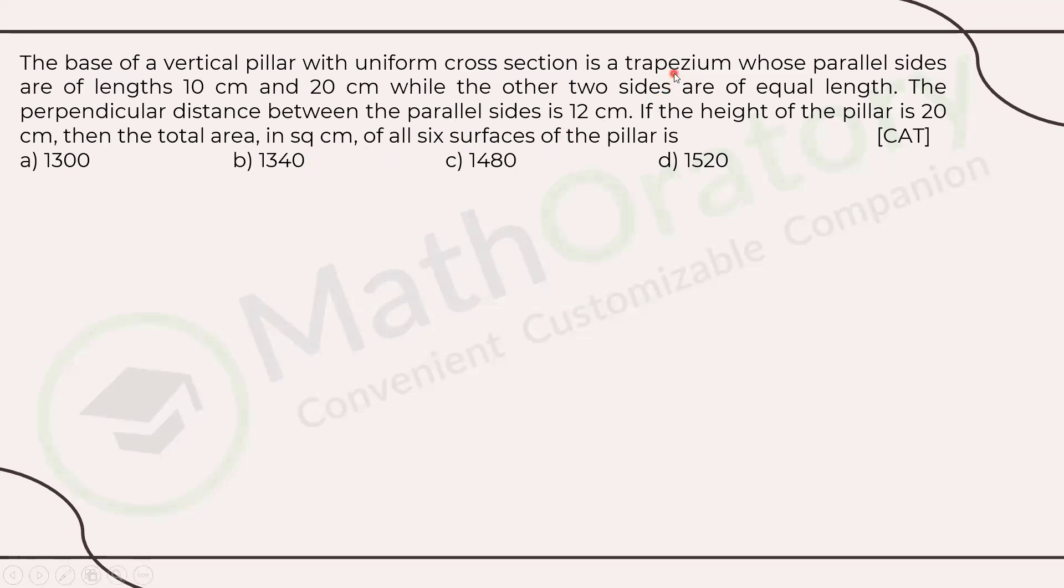If you are aware of geometrical shapes, this is basically a prism, a prism having trapezium as the base. So you will have a trapezium at the base, trapezium at the top, and every corresponding point will be directly connected. The trapezium has the parallel sides of length 10 centimeter and 20 centimeter, while the other two sides are of equal length. So basically, it's an isosceles trapezium.